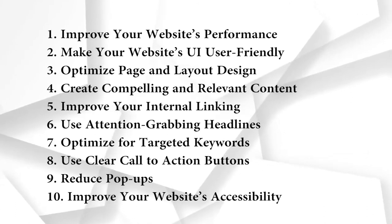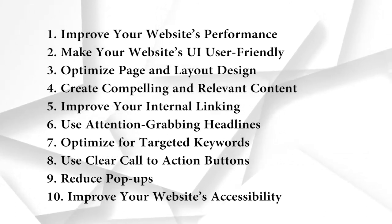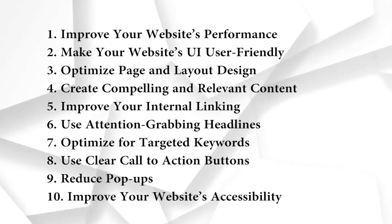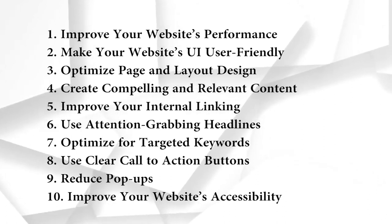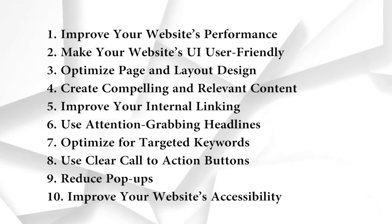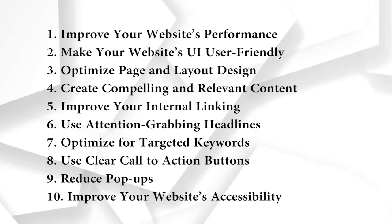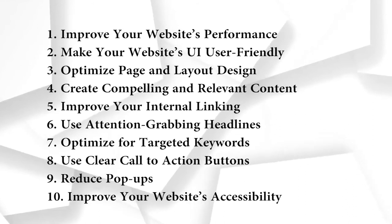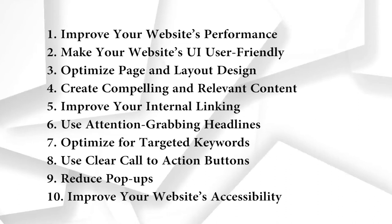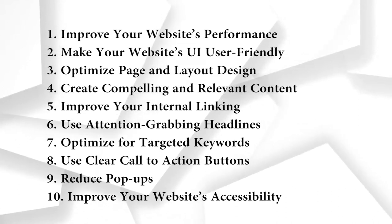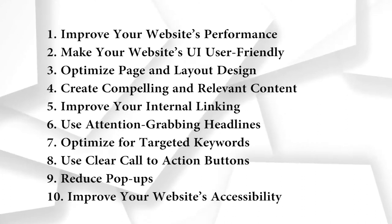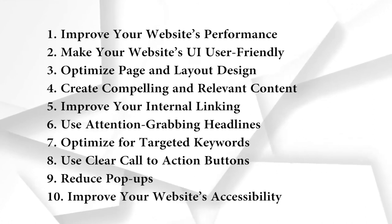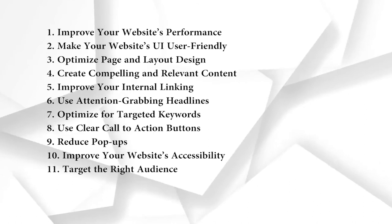Number ten: improve your website's accessibility. Improving website accessibility ensures all individuals can access and use your website regardless of their ability. It means making sure text is clear and legible, providing descriptive alternatives for images, and enabling smooth navigation with assistive technology. Prioritizing accessibility creates an inclusive online environment that welcomes everyone, removes barriers for individuals with disabilities, and enhances the overall user experience. Embracing accessibility demonstrates inclusivity and opens doors to a broader audience.